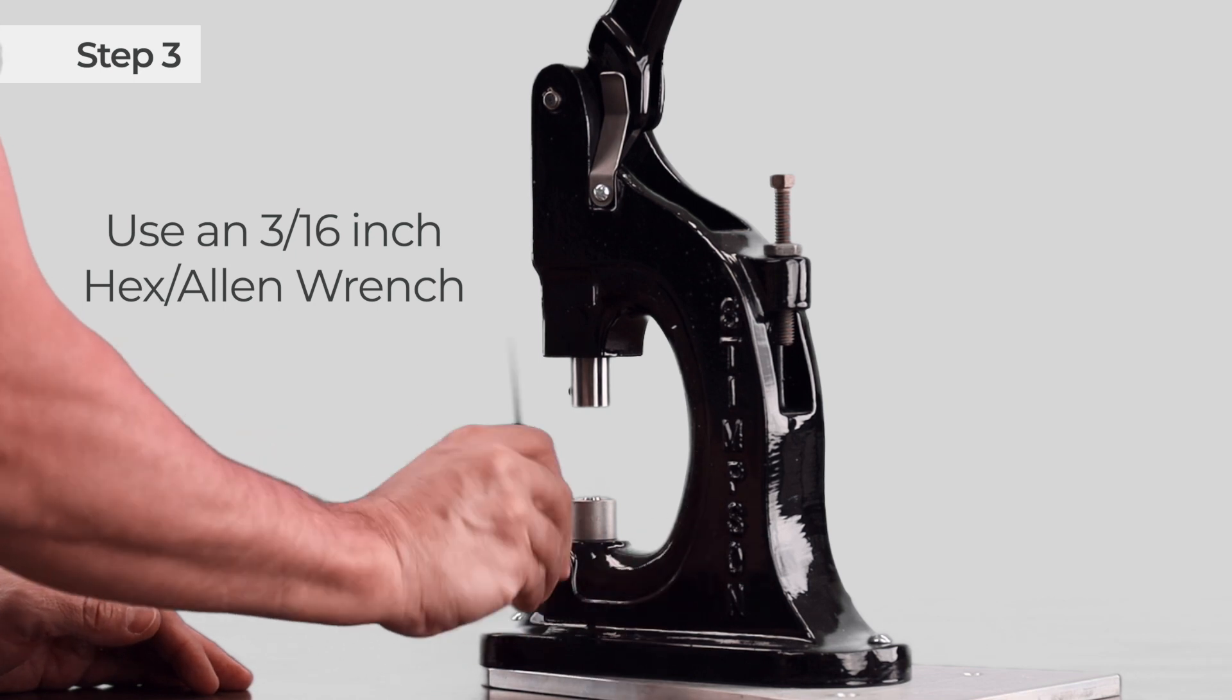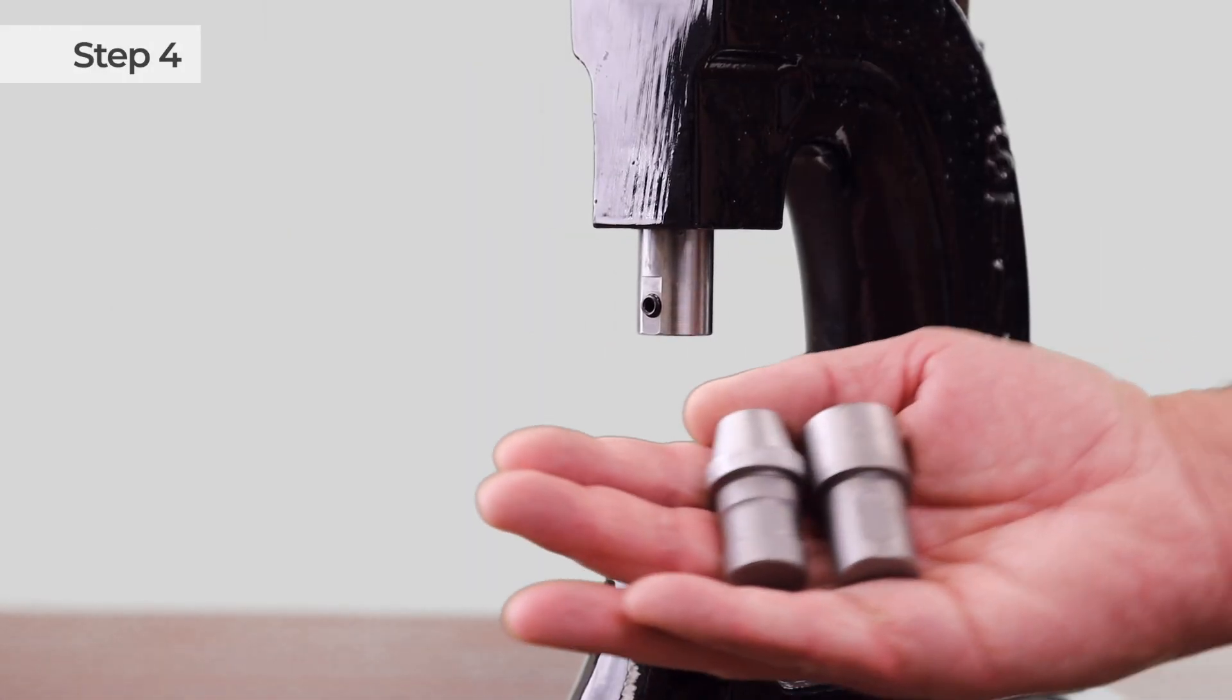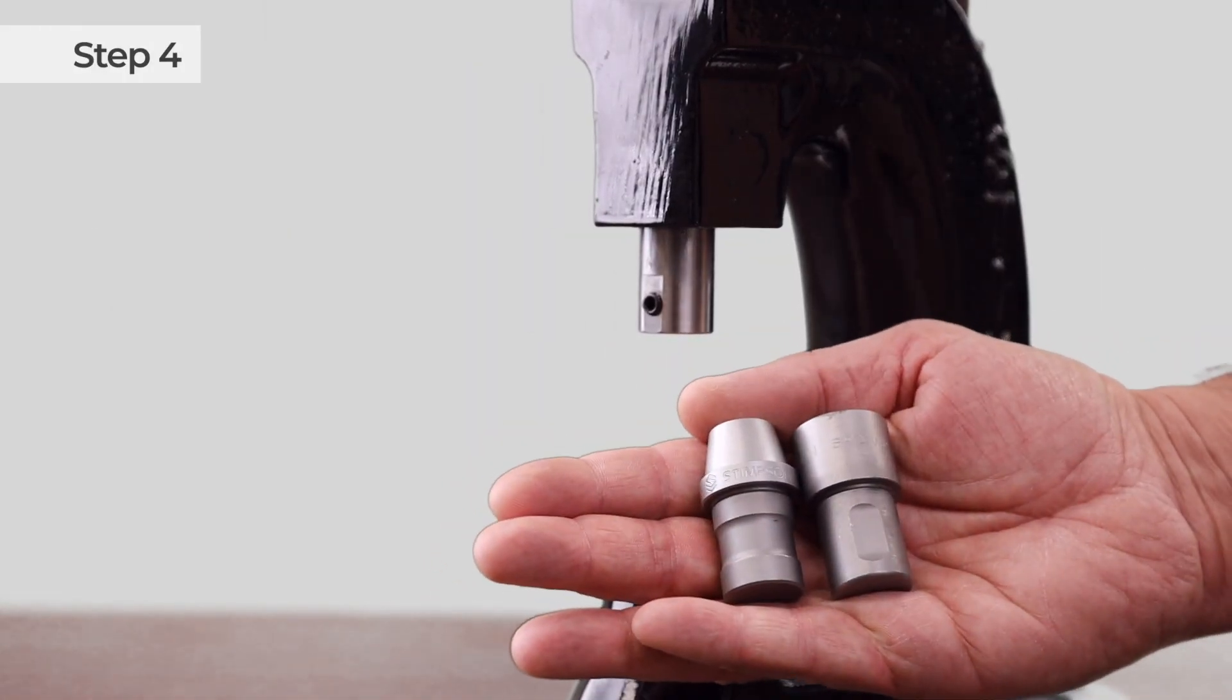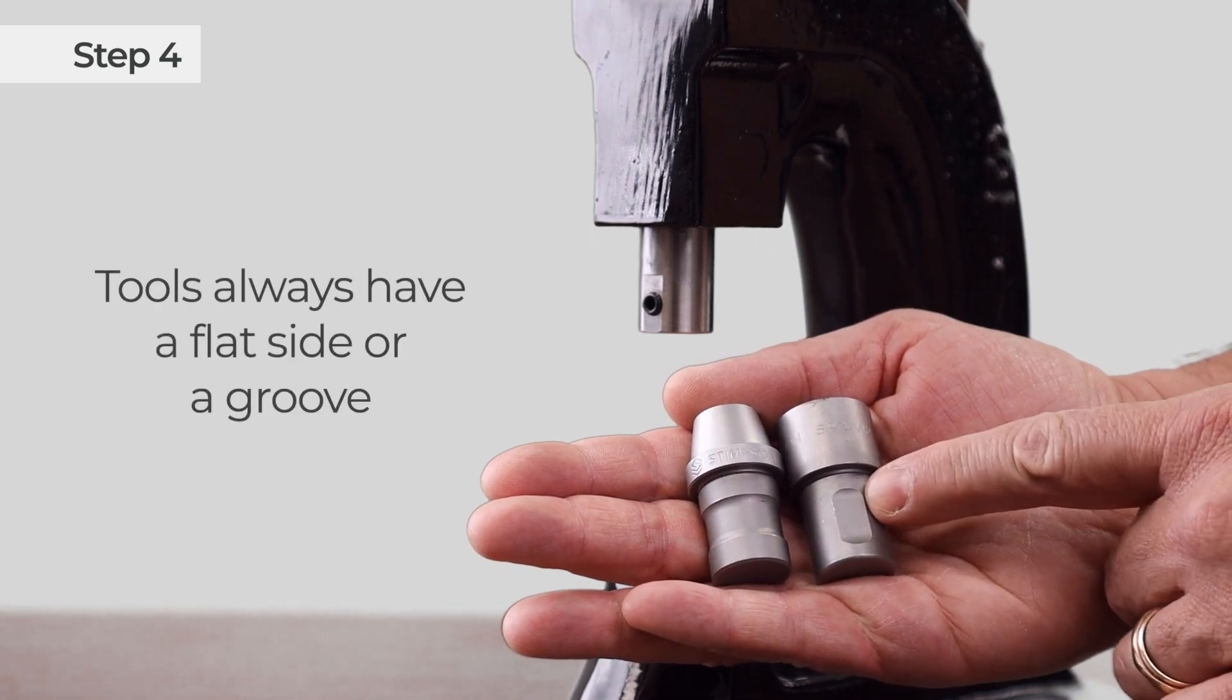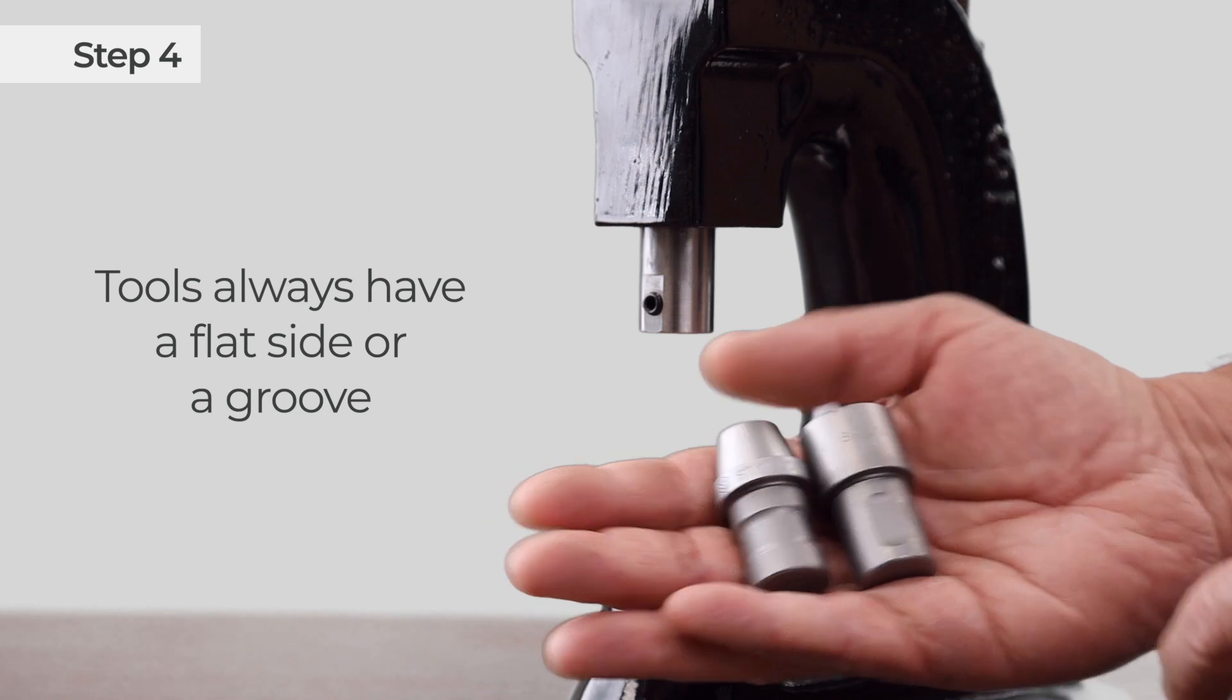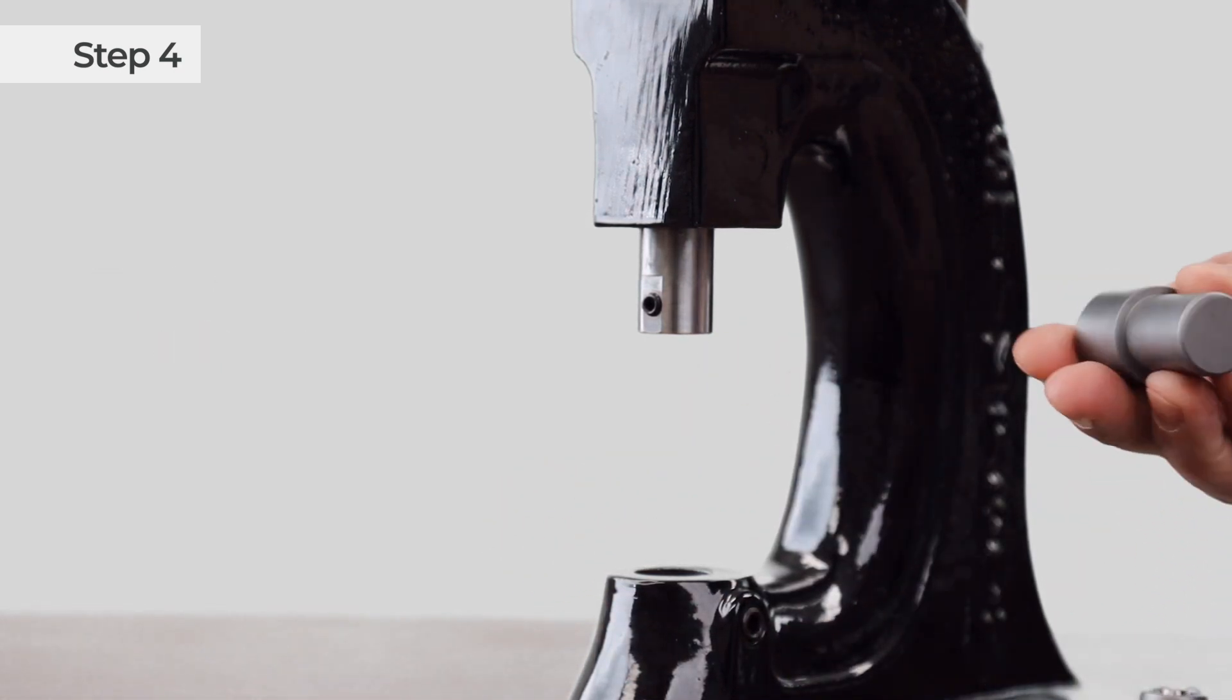That's all it takes to remove the setting tools. Now you basically reverse the process to put the new tools back in. First, I'll put the bottom set in. The tools will always have a flat side or a groove. If there is a flat side like this one, that needs to face the set screw so the screw tightens against it.